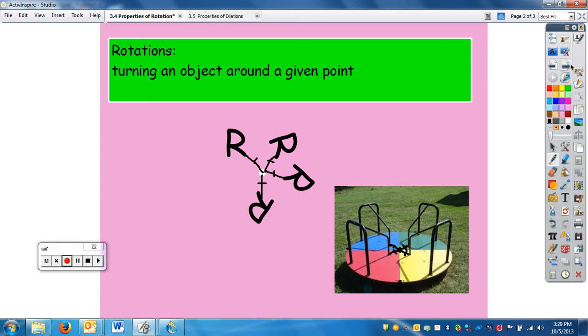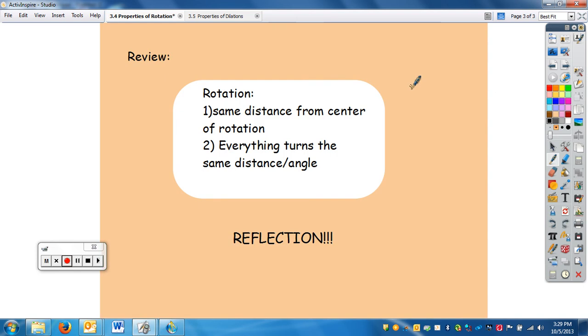So you need for a rotation: the same distance from the center of rotation, and everything turns the same distance or angle. You need to make sure that if I tell you to rotate something 70 degrees, every point is turned the same amount—70 degrees. So you're going to have to measure each point individually. Reminder: do your reflection to get credit for watching this video.